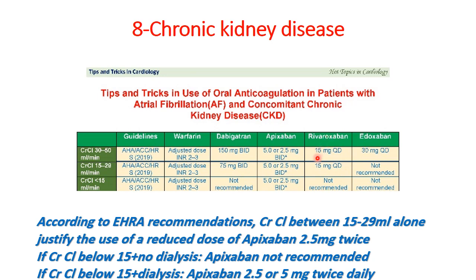For rivaroxaban: if creatinine clearance is between 30 and 50, use 15 mg once daily; if below 15, rivaroxaban is not recommended. For edoxaban: use 30 mg once daily if creatinine clearance is between 30 and 50, and it is not recommended if creatinine clearance is below 30.